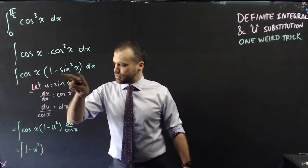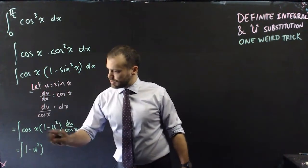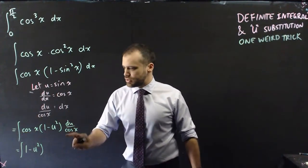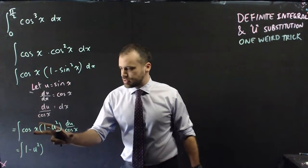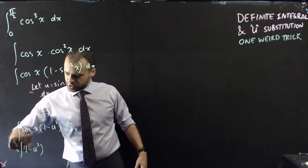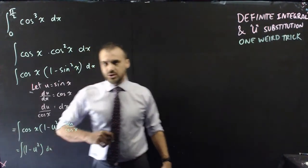We rearrange du over cos x equals dx. We sub in u for sine x. So we get cos x bracket 1 minus u squared du over cos x. The cos x's cancel out, and we end up with this neat little integral of 1 minus u squared with respect to u.